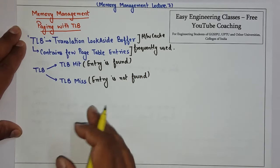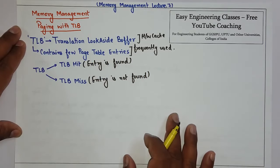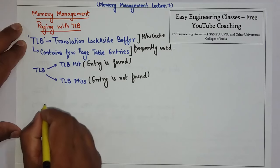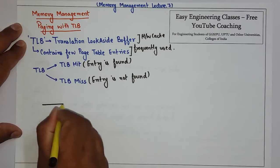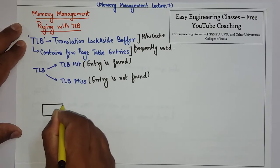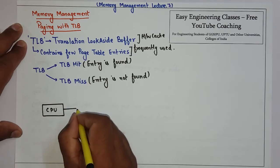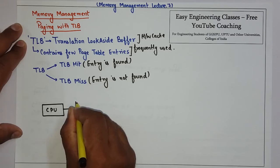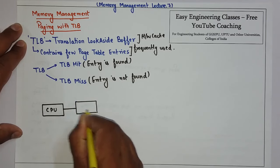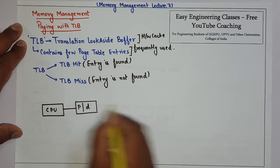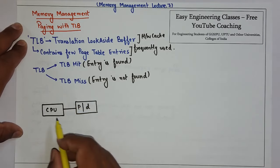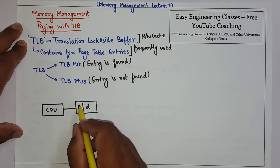Now we will see the architecture of paging with TLB. The initial architecture remains the same as before - the CPU generates a logical address which is divided into two parts: page number and offset.